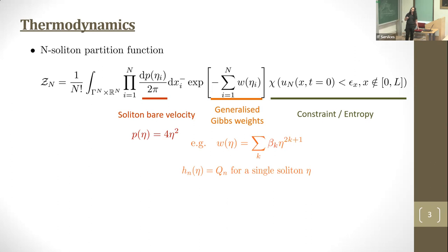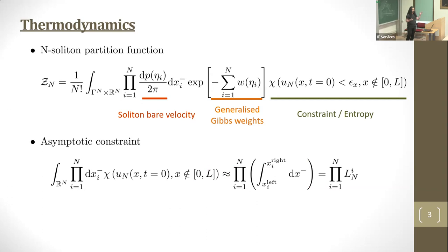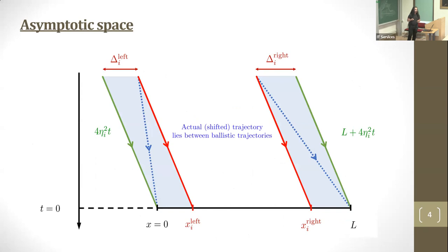H is the value of the conserved quantity for a single soliton of parameter eta. For KDV, H takes a very simple expression. This is some sort of constraint which amounts to an entropy term. The constraint is that our soliton gas at time equals zero is supported in a finite interval of length L.